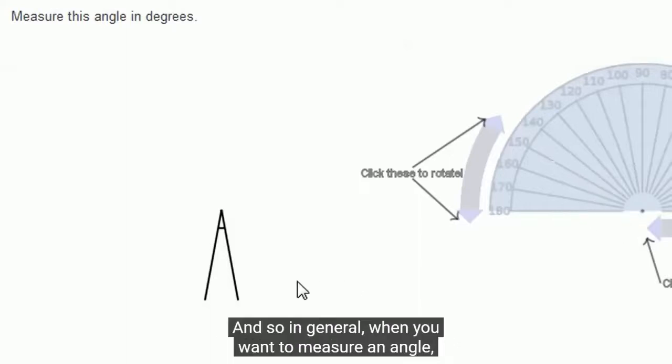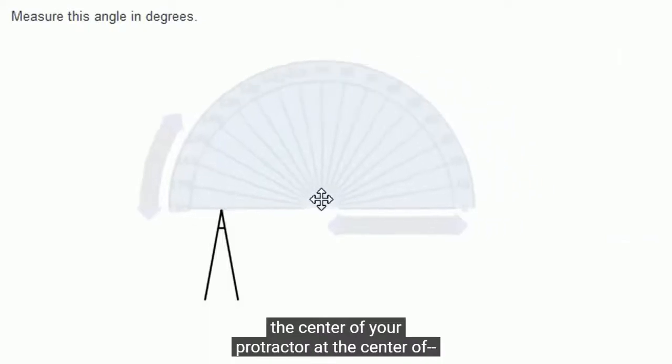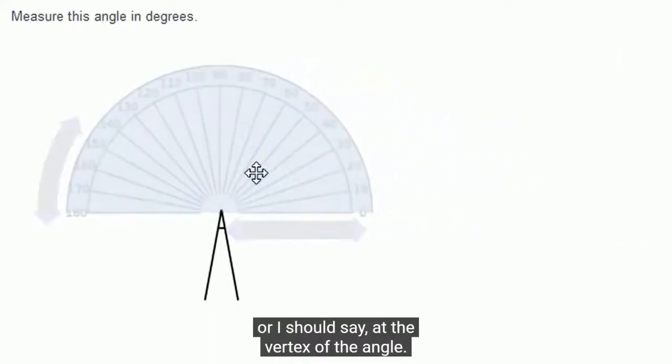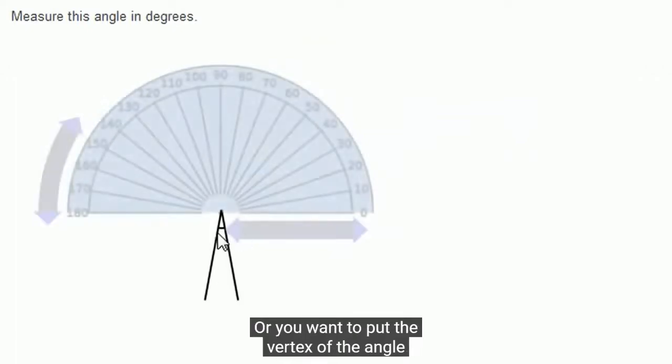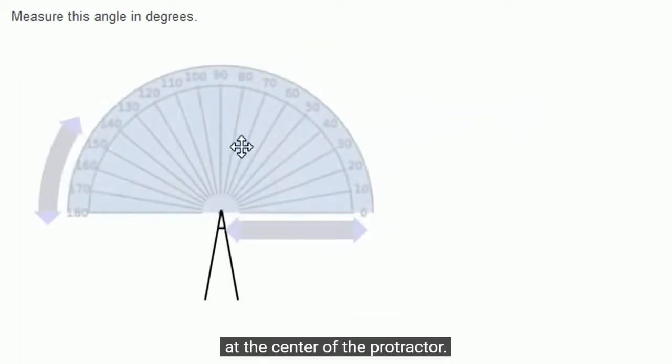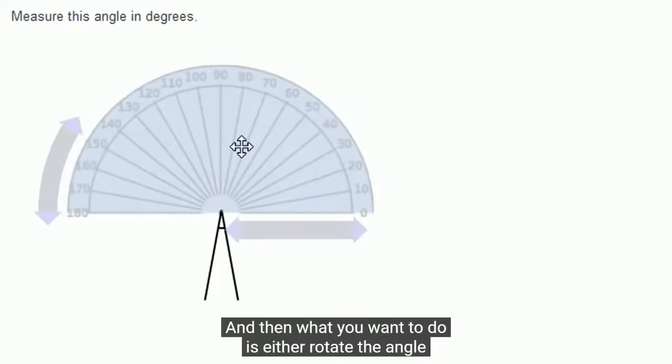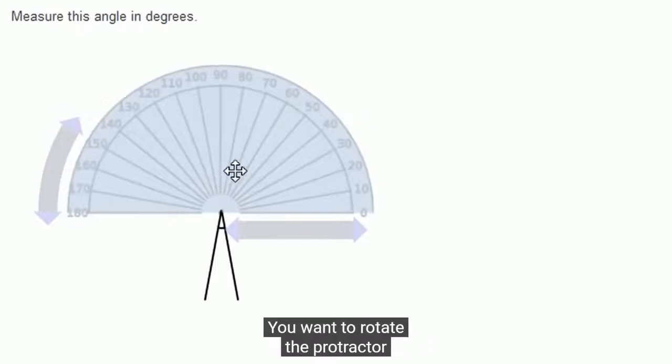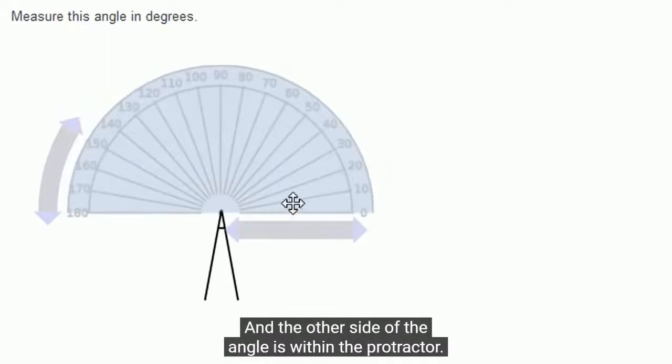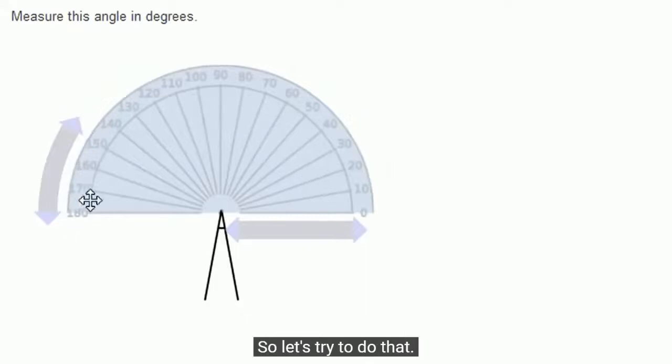In general, when you want to measure an angle, what you want to do is put the center of your protractor at the vertex of the angle. And then what you want to do is either rotate the angle or rotate the protractor. In this case we're going to rotate the protractor. You want to rotate the protractor so that the zero angle, or the zero mark, is at one of the sides of the angle, and the other side of the angle is within the protractor. So let's try to do that.